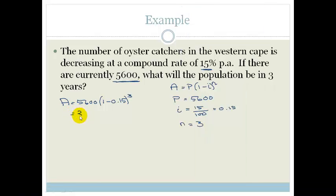So that is 3,439.1 birds. And obviously you can't have 0.1 of a bird so we're going to round it down. Therefore in 3 years we are only going to have 3,439 birds or oyster catchers which is actually very sad.